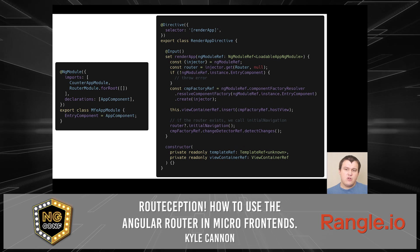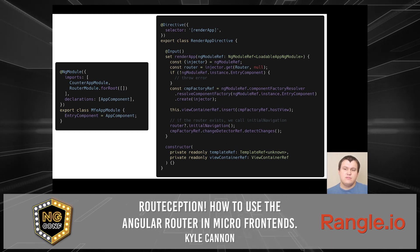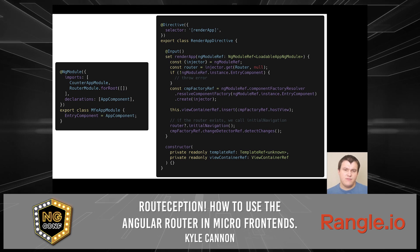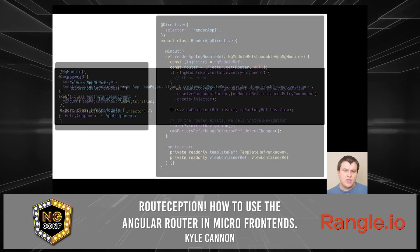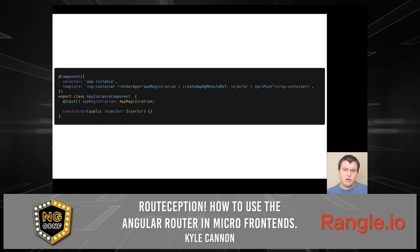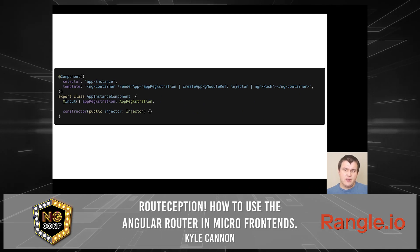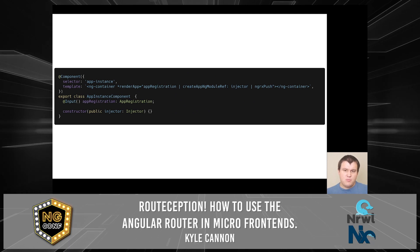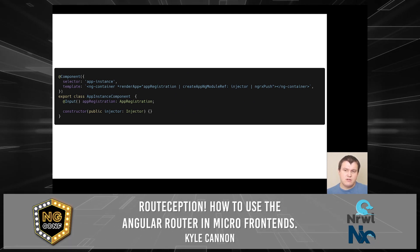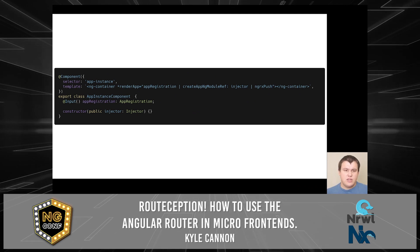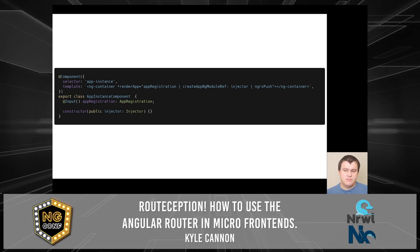Finally, after inserting our new application, we call router.initialNavigation and detect changes on the component factory ref. To bring it all together, we build our app instance component. We use our render app structural directive we just created, push the app registration into our pipe that we just created, and provide the app instance component injector as the parent injector on the pipe's argument. Finally, we use ng-rx push to unwrap the observable.